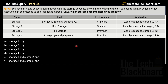Question 197 — very important and equally confusing. The question says: you have an Azure subscription that contains the storage accounts as shown in the following table. You need to identify which storage account can be switched to Geo-Redundant Storage (GRS). The table shows four storage accounts with their name, kind (Storage V2, Blob Storage, File Storage, Storage general purpose V2), performance (Standard or Premium), and replication option (Zone-Redundant Storage or Locally Redundant Storage).